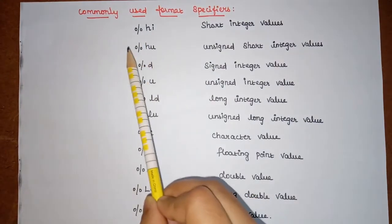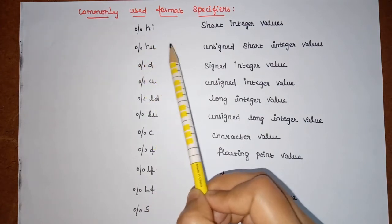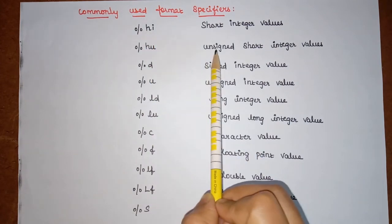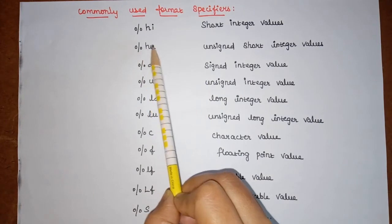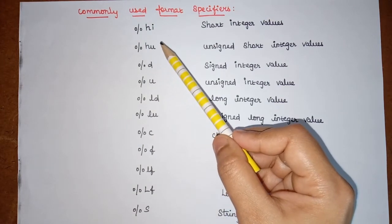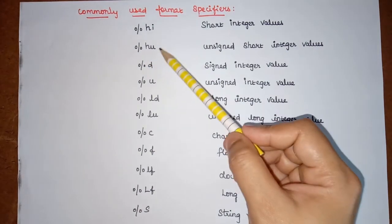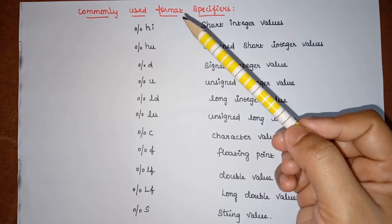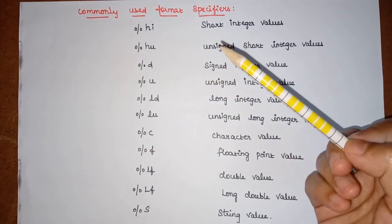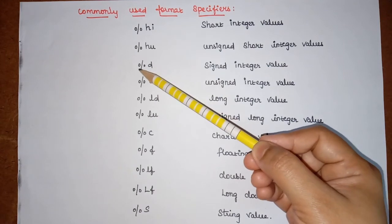Similarly, %hu is used for unsigned short integer values. When it is a signed short integer we use %hi, but for unsigned short integer values we use %hu. The 'u' specifier is used when we are dealing with addresses, since an address cannot be negative — it is always a positive value. So for that purpose we use %u. The next one is %d.